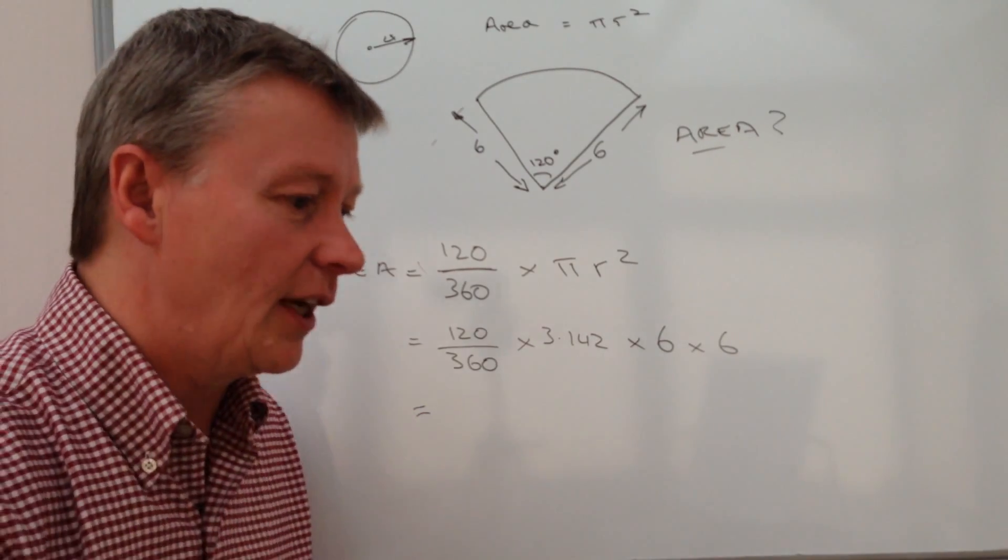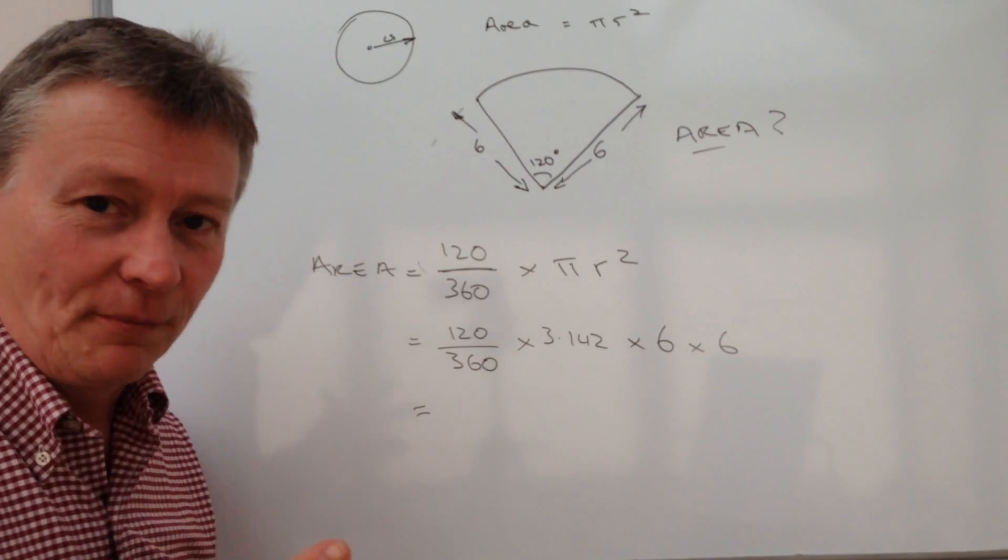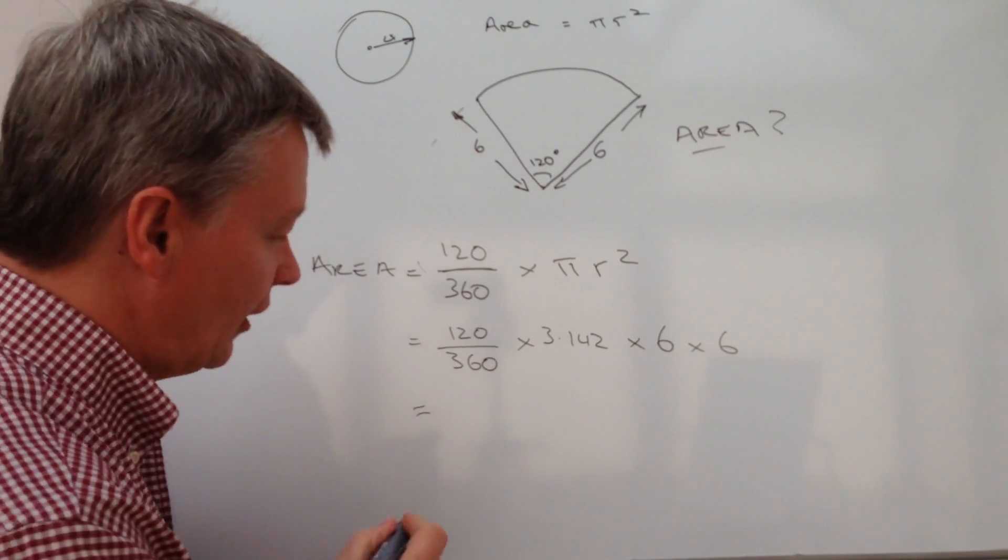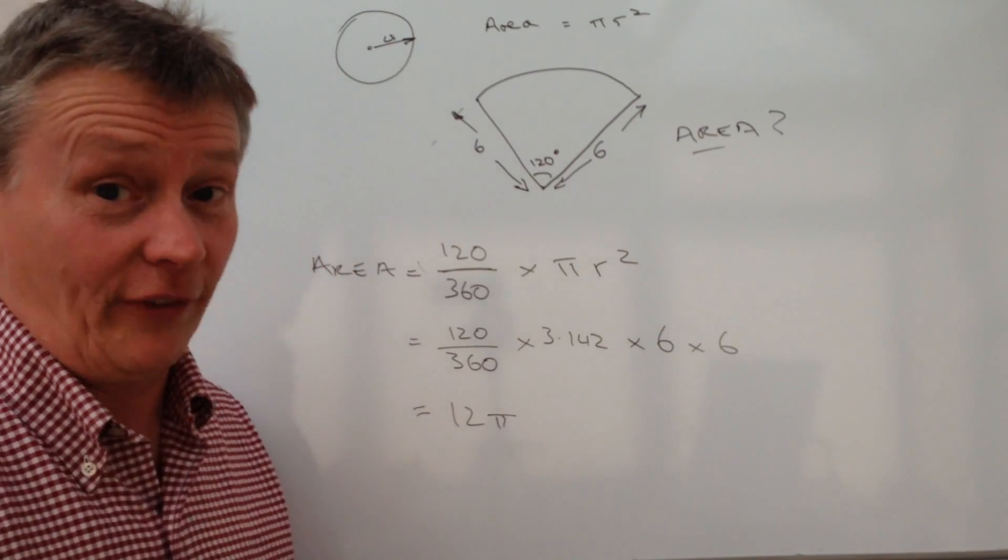Pop those numbers into a calculator and you'll end up with a really long number. Well, two things you might end up with. Firstly, the calculator will say it's actually 12 pi, which is perfectly true.